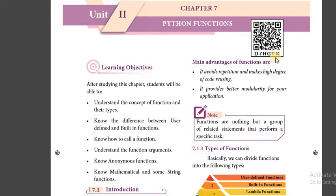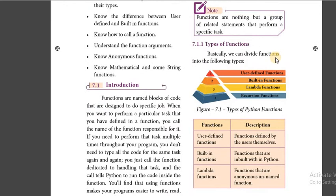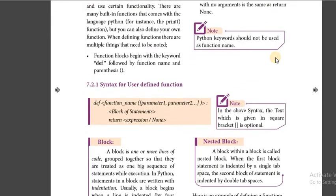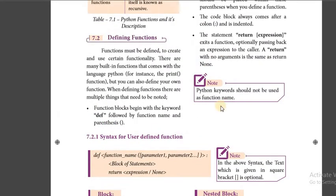Functions are nothing but a group of related statements that perform a specific task. There are four types of functions in Python: user defined function, built-in function, lambda function, and recursive function. For user defined functions, we should use the keyword def, then give the function name, then the list of parameters, then a block of statements, and then a return statement.